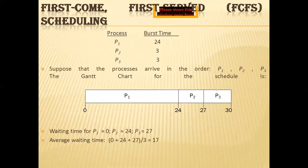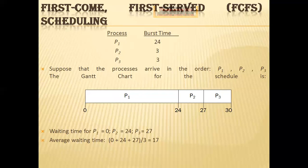There are six types of scheduling algorithms. The first is First-Come First-Served (FCFS) scheduling — the simplest of all scheduling algorithms. The key concept is to allocate the CPU in the order in which processes arrive. When the CPU is free, it is allocated to the process at the front of the queue. Once this process goes into the running state, its process control block is removed from the queue. This algorithm performs only non-preemptive scheduling.